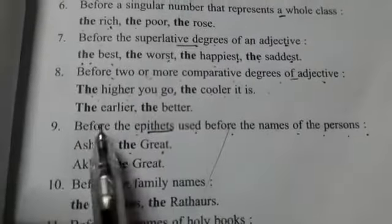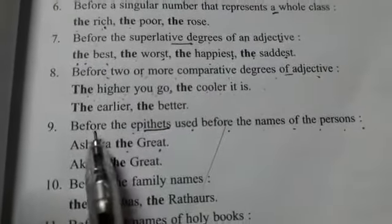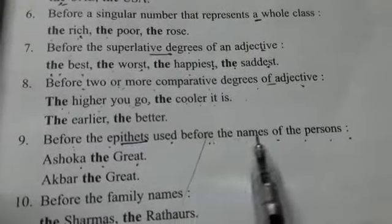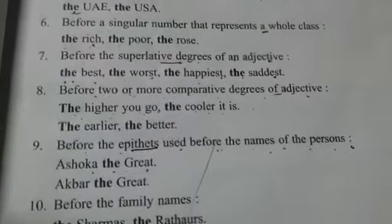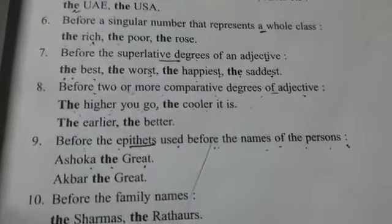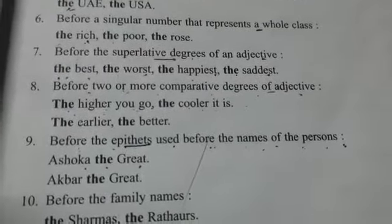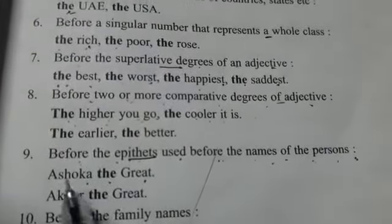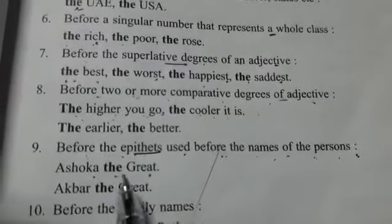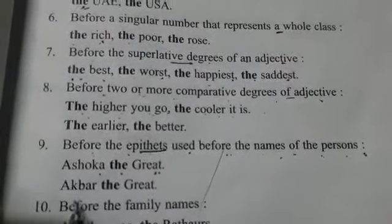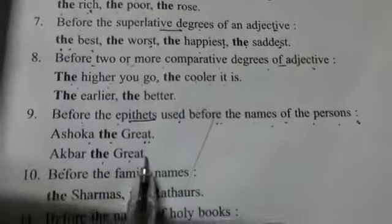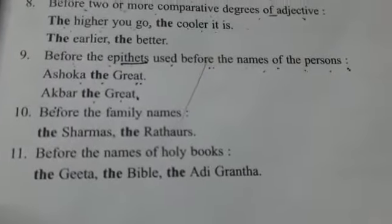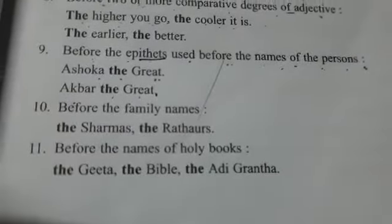Then, ninth: before the epithets used before the names of a person. Means kisi person ki quality ko jab hummne batana hai, toh usse pehle hum 'the' use keringe. Like 'Ashoka the Great,' 'Akbar the Great' — yeh unki qualities ke baare mein hum bata rahe hain ki woh great thay.